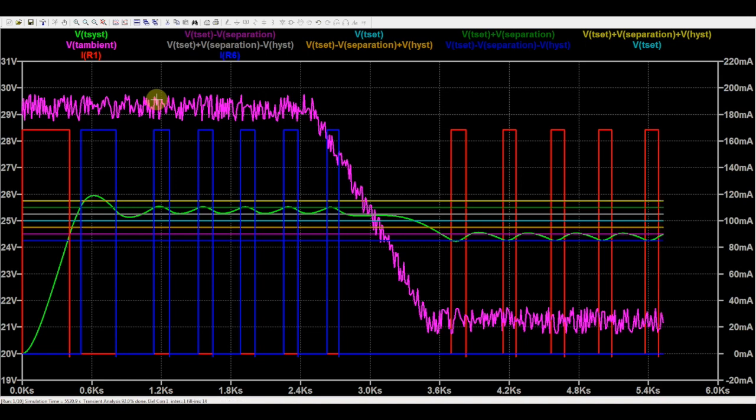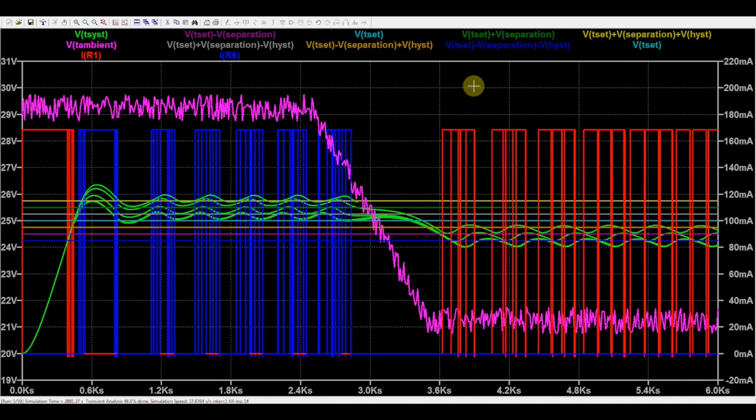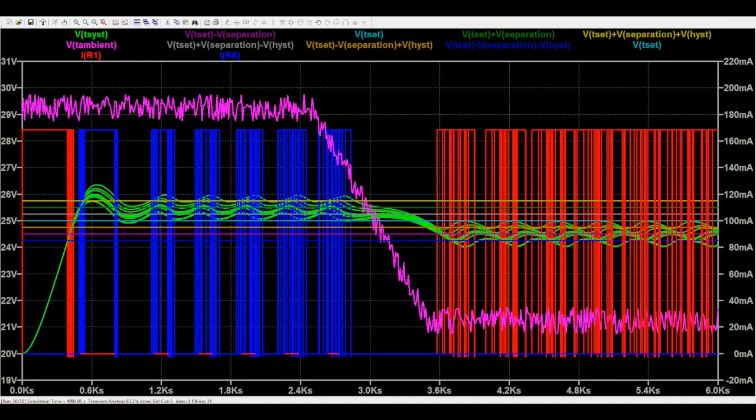As explained earlier, several simulations are done in a Monte Carlo analysis and after 10 runs, we see that cooling will be performed globally between 25 and 26 degrees C and the heating between 24 and 25 degrees C. So we are able to compute the contribution of all passive element tolerances to the temperature control.